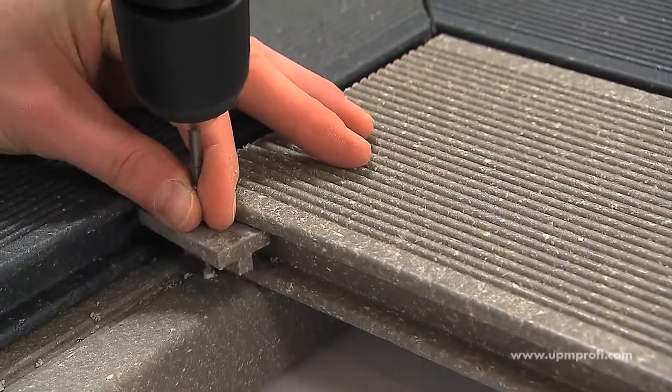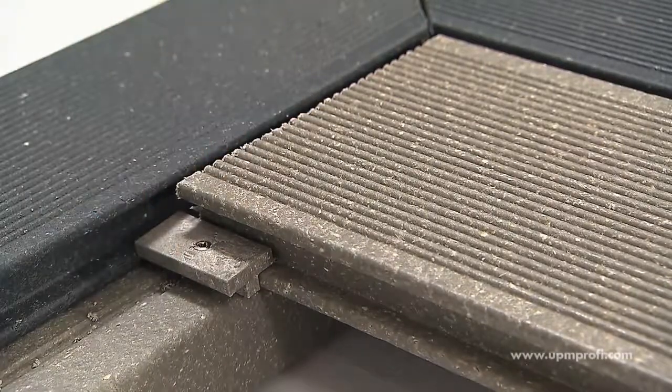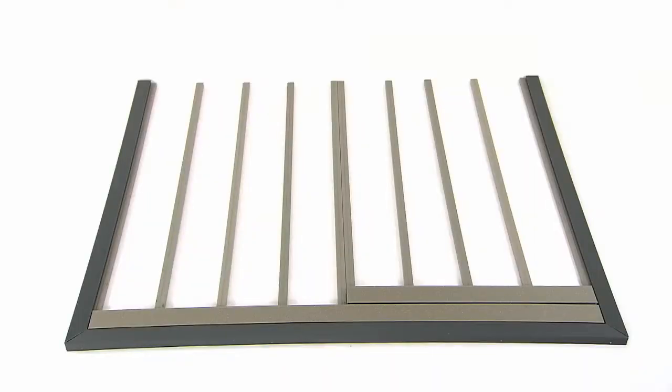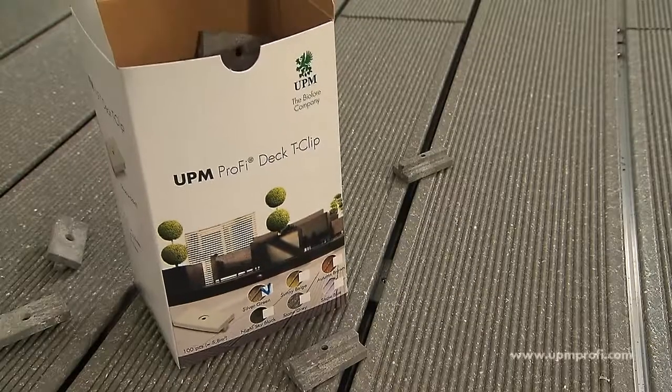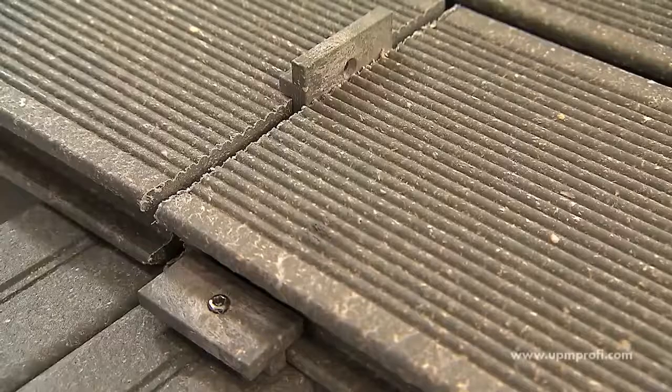Then use the T-clips to fix the deck board at each support rail. The process is repeated with each subsequent deck board. Wherever the ends of two deck boards meet, expansion gaps must be left and double support rails and double T-clips must be used.